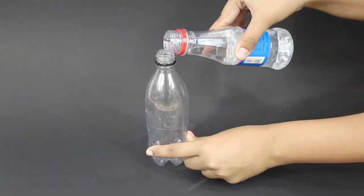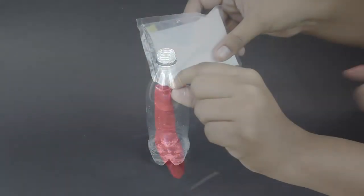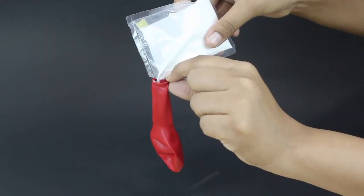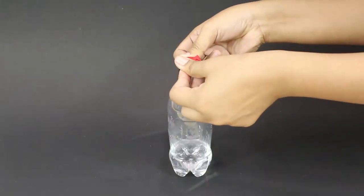Pour about 30 ml of vinegar in the plastic bottle. Fill about a tablespoonful of baking soda in the balloon. Now attach the balloon to the bottle as shown.